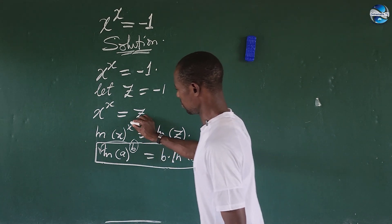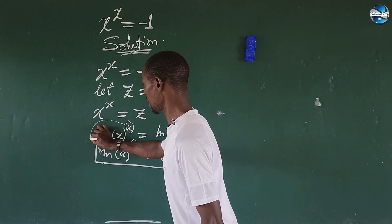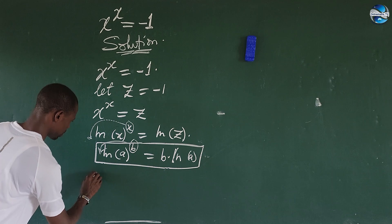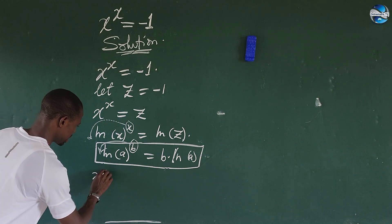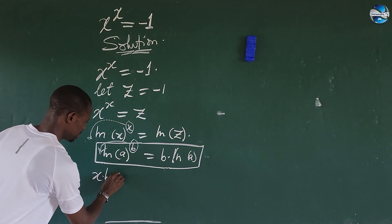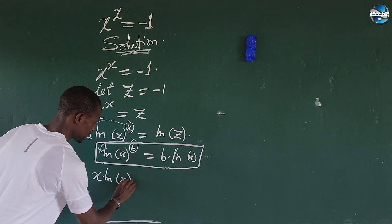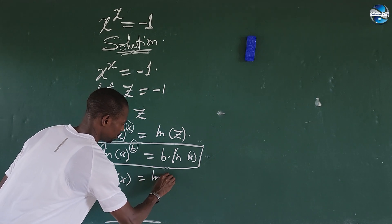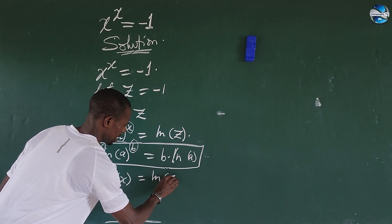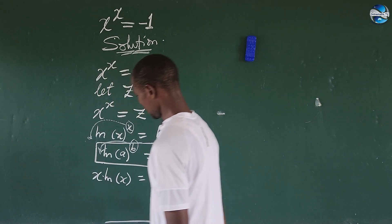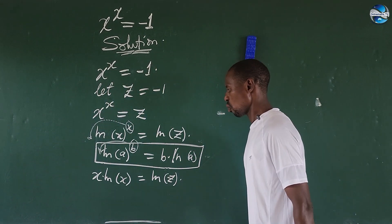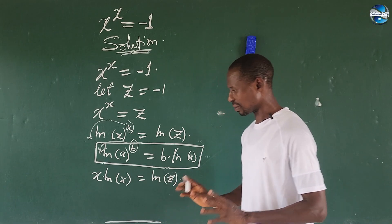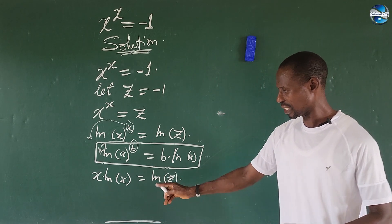So if we apply that law here, we can rewrite this expression. This is going to give us x times ln of x, and this is equal to ln of z.